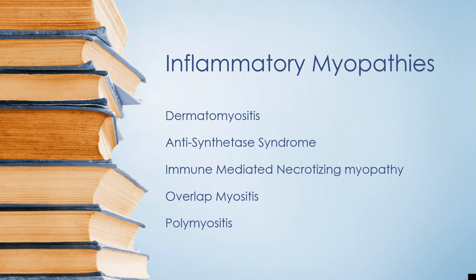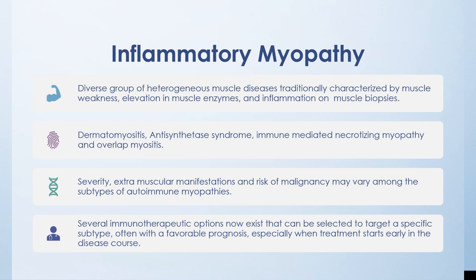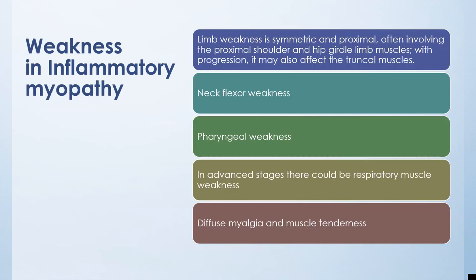Next we discuss inflammatory myopathies, which include dermatomyositis, antisynthetase syndrome, immune-mediated necrotizing myopathy, overlap myositis, and polymyositis. These are a diverse group of heterogeneous muscle diseases traditionally characterized by muscle weakness, elevation of muscle enzymes, and inflammation on muscle biopsies. Severity, extra-muscular manifestations, and risk of malignancy vary among subtypes. In inflammatory myopathy, limb weakness is symmetric and proximal, often involving the proximal shoulder and hip girdle muscles, with possible progression to truncal, neck flexor, pharyngeal, and respiratory muscles, and diffuse myalgia.